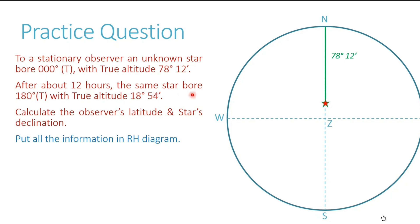Now after about 12 hours, the same star bore 180 true. The 180 bearing is represented by line ZS. On this line we have to mark a true altitude of 18 degrees 54 minutes. S is the horizon at 0 degrees altitude, Z is the zenith at 90 degrees. So from the horizon, we move 18 degrees 54 minutes up — this is where our star is. We name this location Y. The initial location where the star was, bearing north, is named X. And at the southerly bearing the star is named Y.